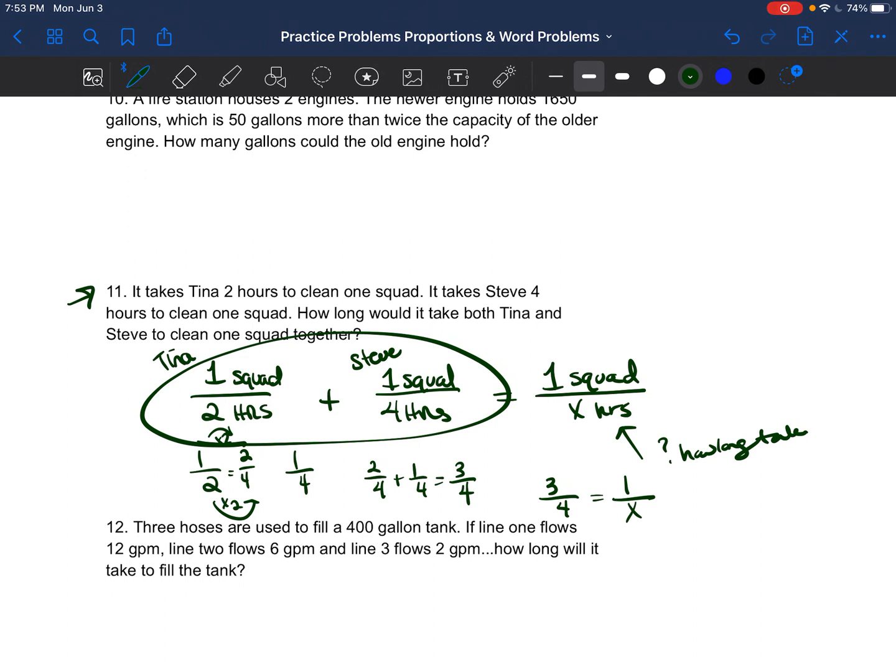So now we can go ahead and cross multiply. Four times one is equal to three times X. Four is equal to three X. Divide both sides by three. And X is equal to four over three.